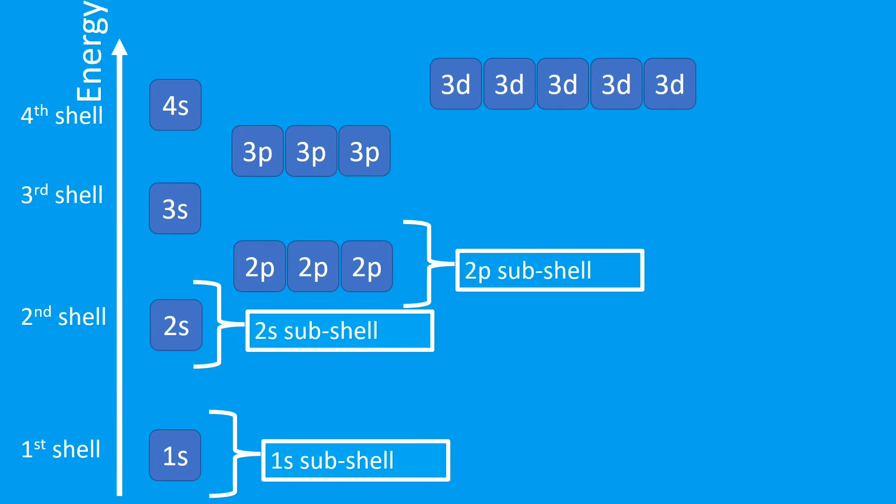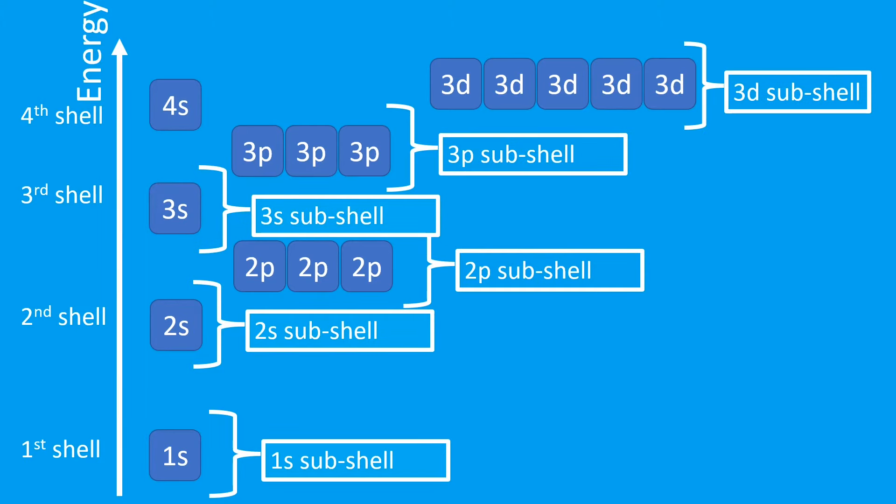So we have the 1s subshell, the 2s subshell, the 2p subshell, the 3s subshell, then the 3p. We have 3d but the 4s will fill before. So they fill in that order: 1s, 2s, 2p, 3s, 3p, 4s, and 3d.